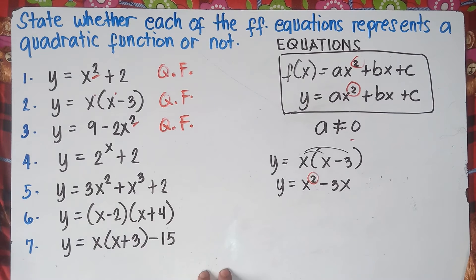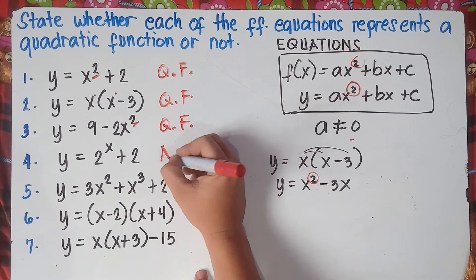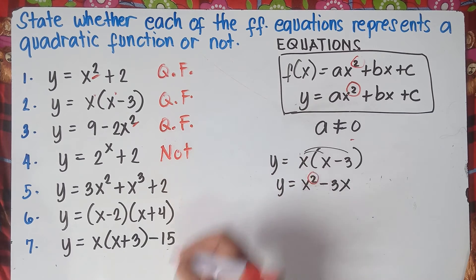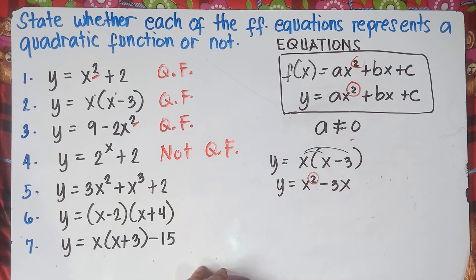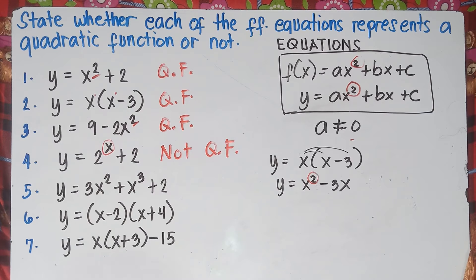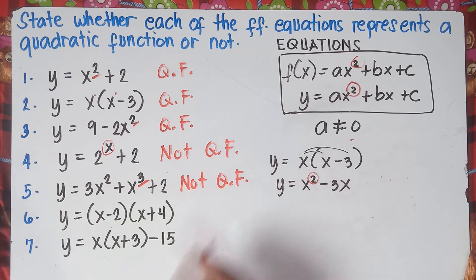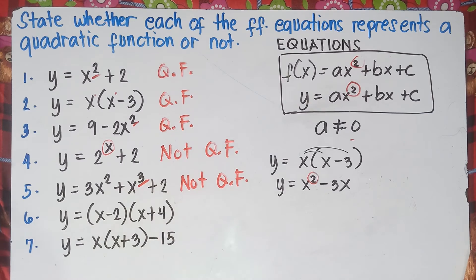Number 4: the exponent is x, not 2, so this is not a quadratic function. Number 5: check the highest exponent — it's 3, not 2, therefore this is not a quadratic function. The highest exponent must be 2 for it to be a quadratic function.